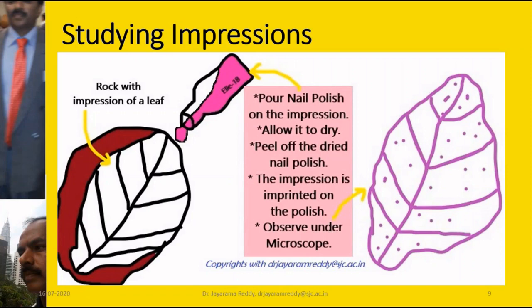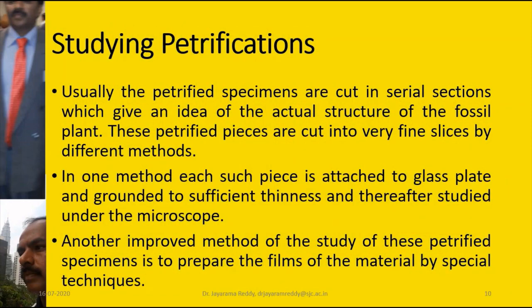You can see an impression of a leaf in a rock, and that impression can be transferred using a very simple technique — pour nail polish onto it, allow the nail polish to dry, then remove the dried nail polish peel, where the fingerprints of the impressions are transferred. Those fingerprints can be studied later under a microscope, or X-ray techniques can also be used.